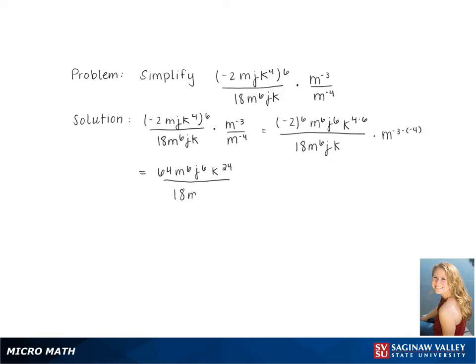Simplifying gives us 64m to the 6th j to the 6th k to the 24, over 18m to the 6th jk, times m to the 7th.